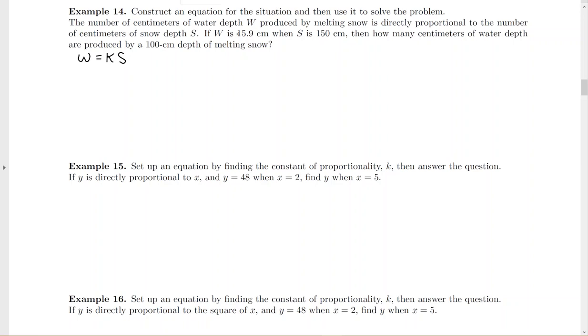So they're going to give me the next set of information that I plug in. If W is 15.9 centimeters when the snow depth is 150, solve for K right now before you go on and plug in anything else. So it's hooked by multiplication, unhooked by division. Divide both sides by 150.